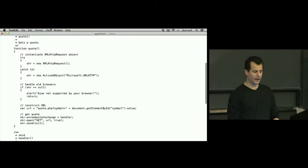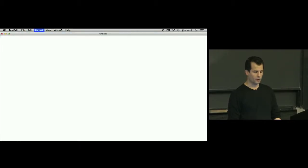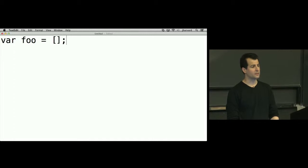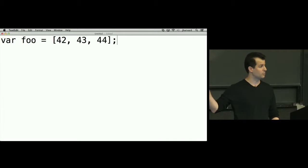You may recall from earlier that what is the syntax for an array? If I have an array, we'll call it foo in JavaScript. How do I give myself an empty array? Square brackets. How do I give myself an array containing the number 42? Like this, 42, 43, 44. So it's just as you would expect in most any similar language.